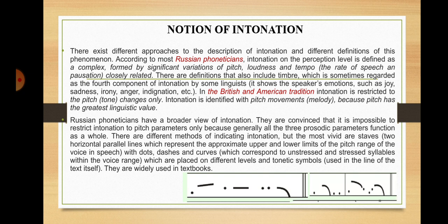There are different methods of indicating intonation, but the most vivid are staves — that is, two horizontal parallel lines which represent the approximate upper and lower limits of the pitch range of the voice in speech — with dots, dashes, and curves, which correspond to unstressed and stressed syllables within the voice range, placed on different levels, and tonetic symbols used in the line of the text itself. You can see an example of indicating intonation here below. They are widely used in textbooks.